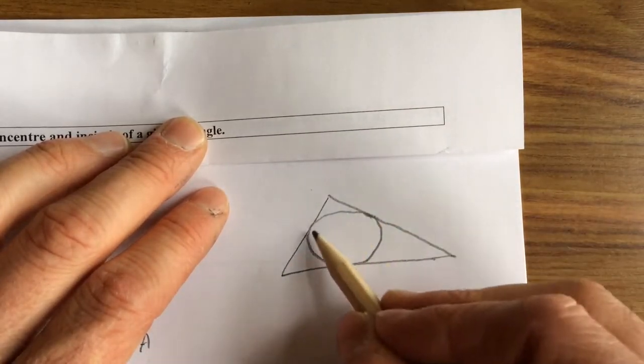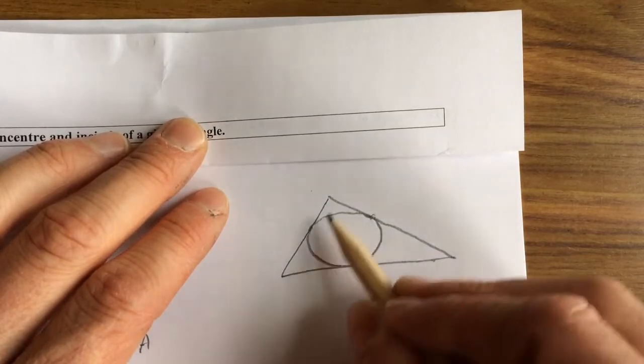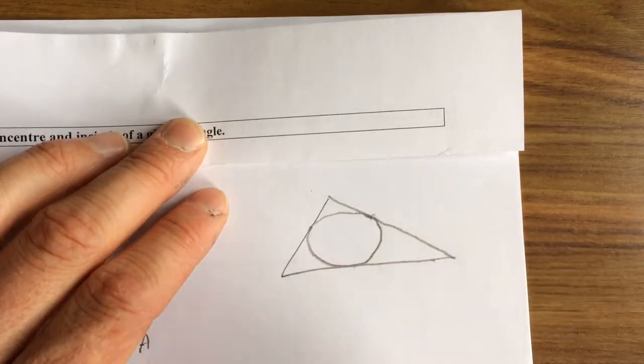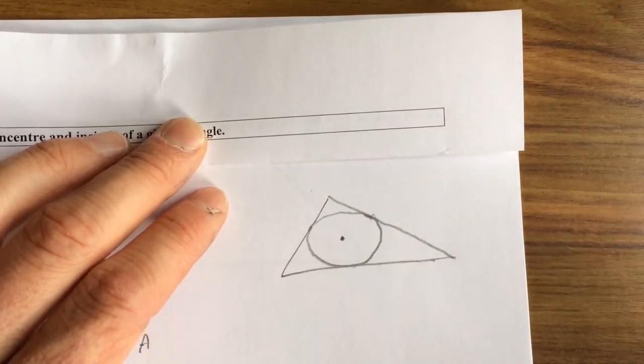The three sides are like tangents to the circle. The center of that circle is known as the incenter of the triangle, and the method that we're going to use is to get the incenter of a triangle you must bisect the three angles.